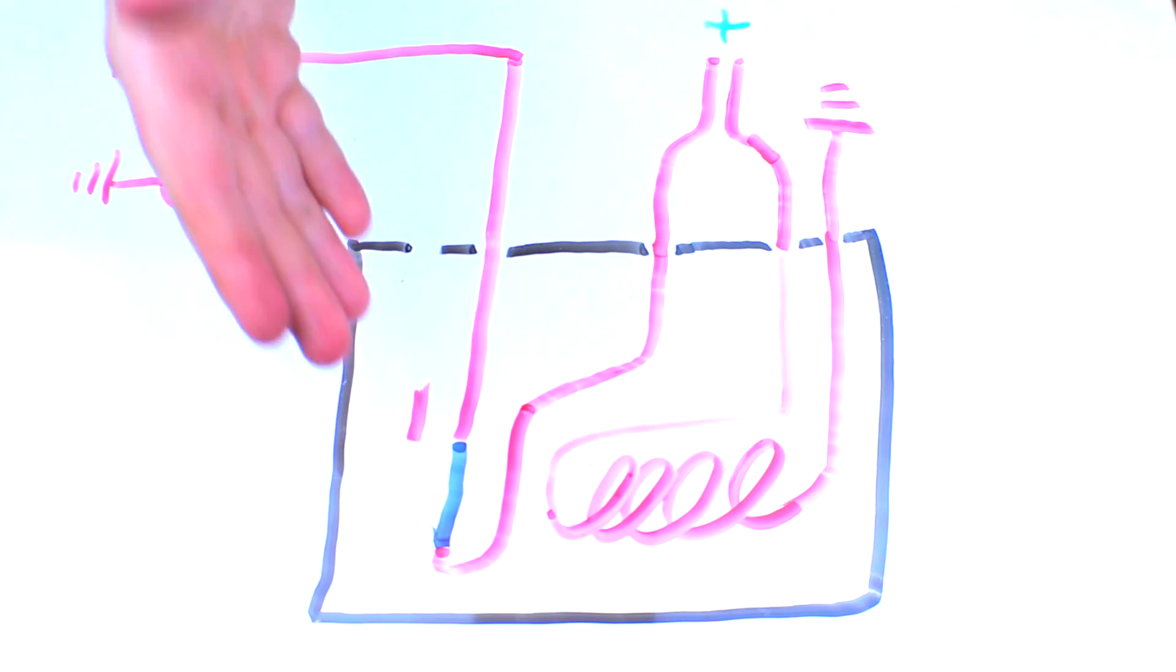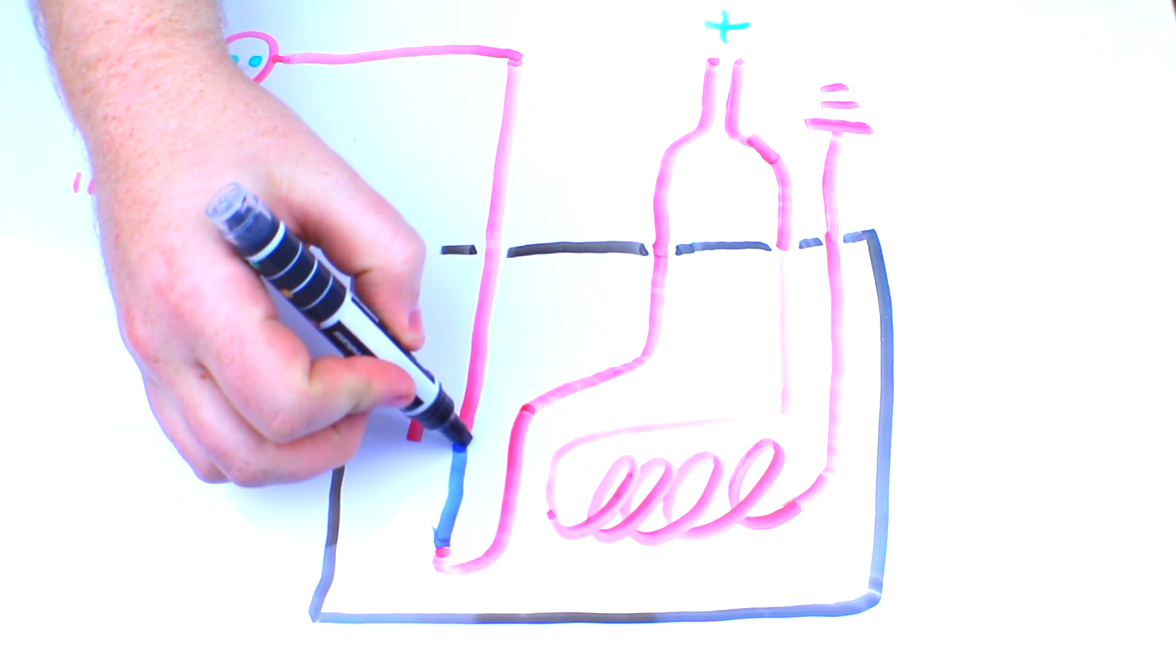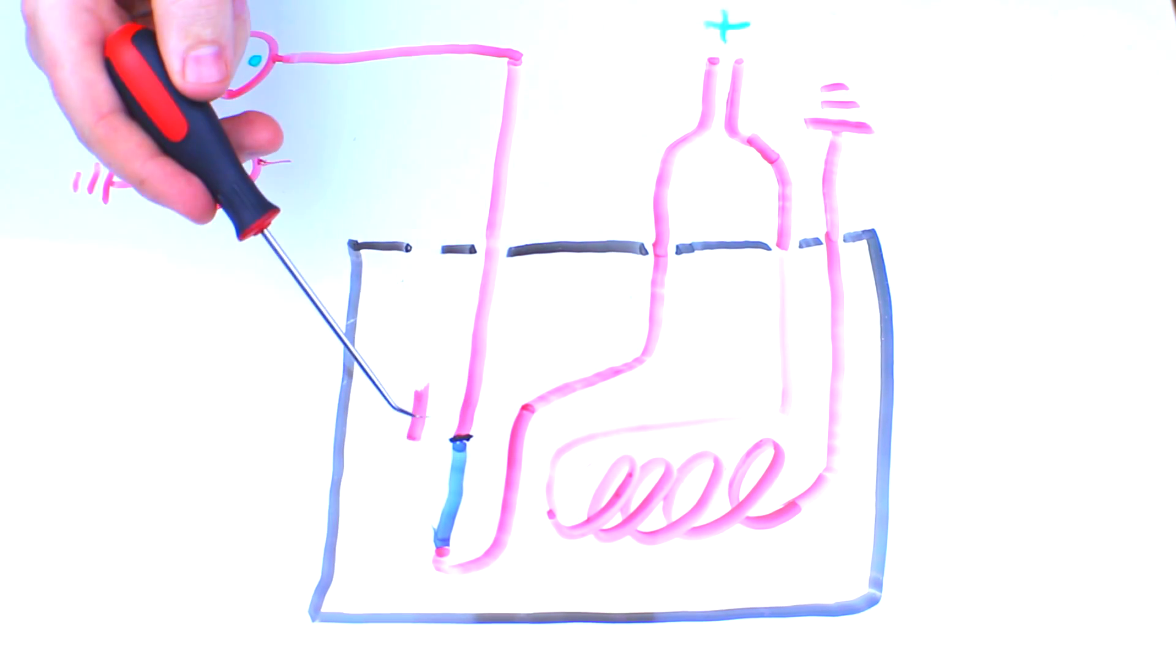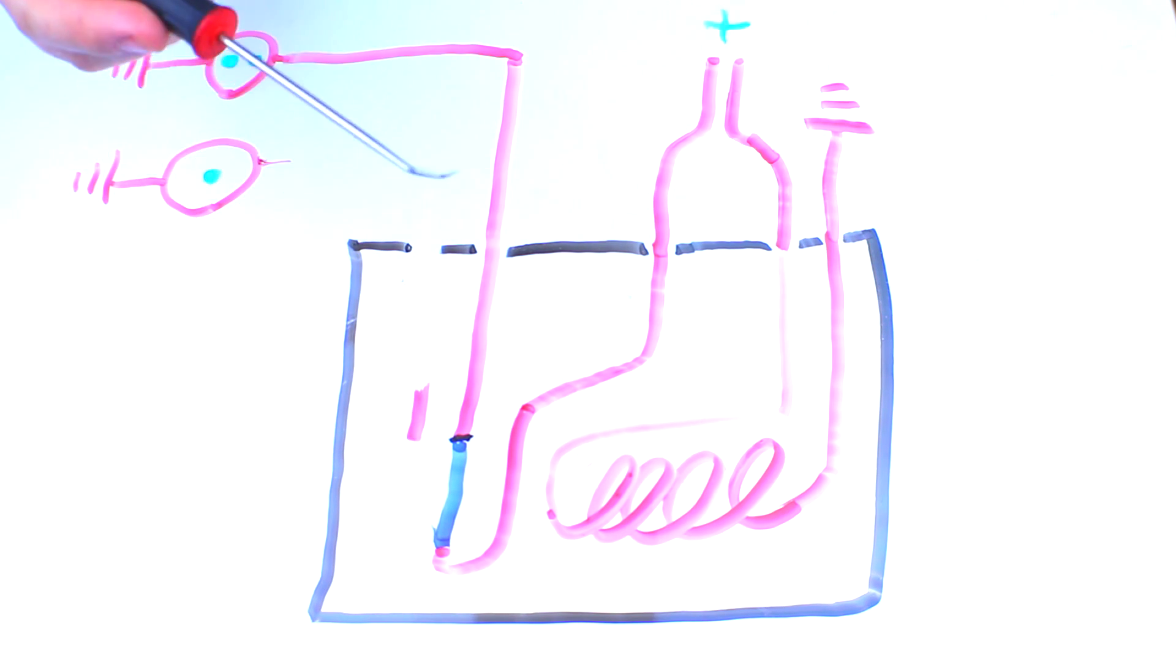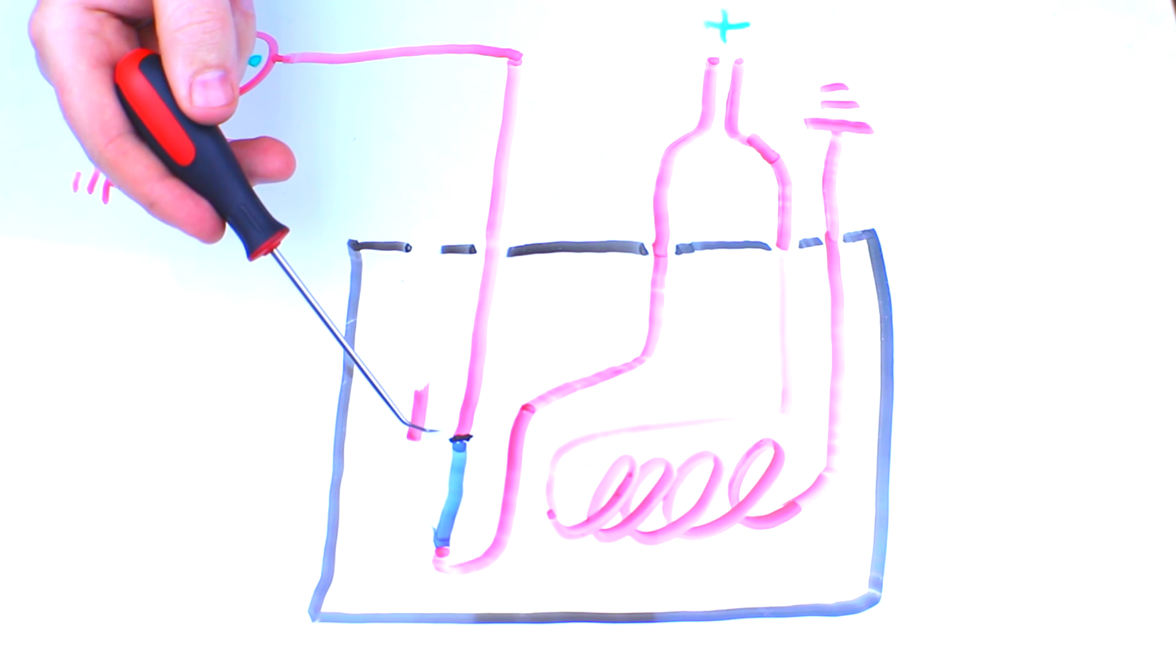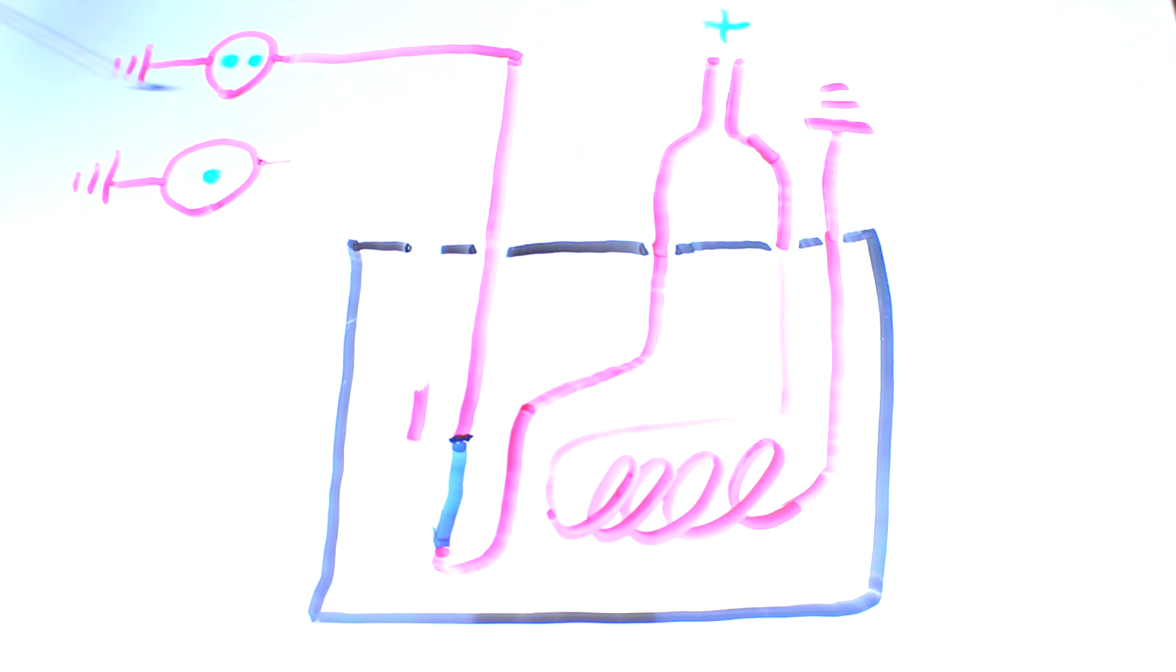Another way these things can fail is on the switch side. You can get a buildup of junk right here. At some point that's going to stop the flow of electricity entirely or it's going to build up enough resistance that whatever you're powering isn't going to get enough power. For example it might make a light bulb look dim or a motor might not turn as fast as it should.